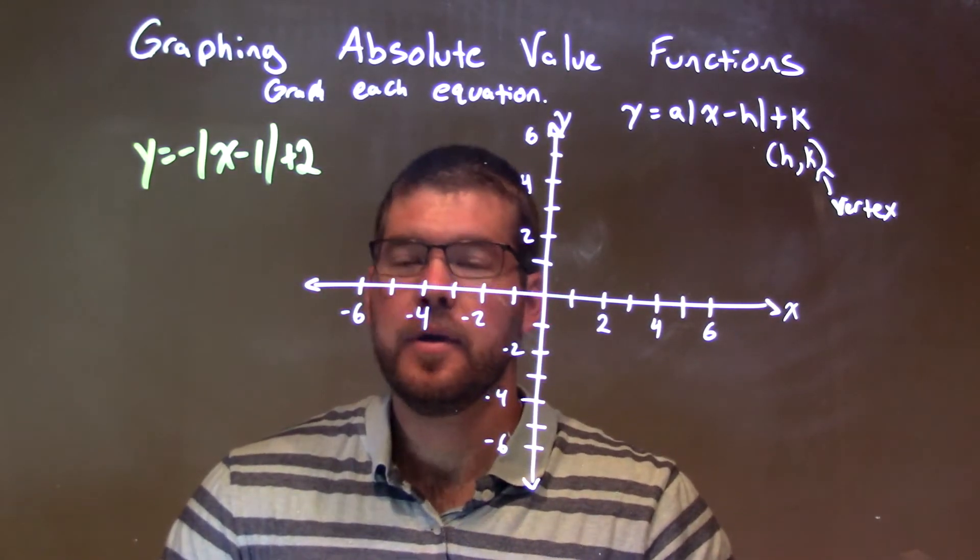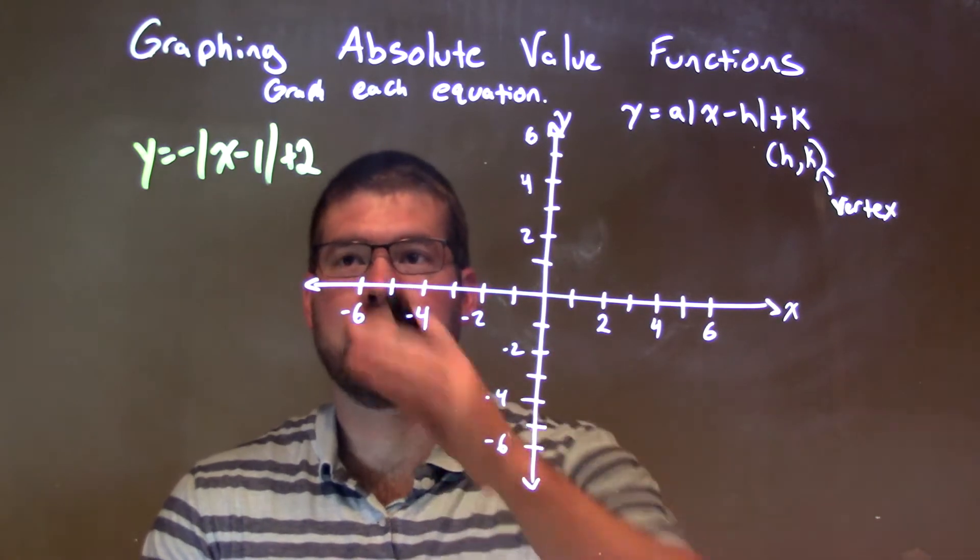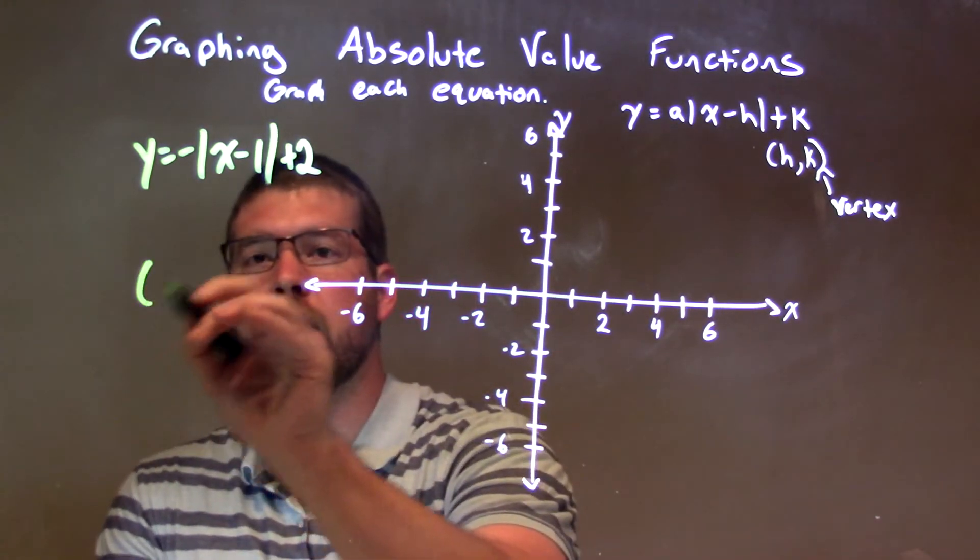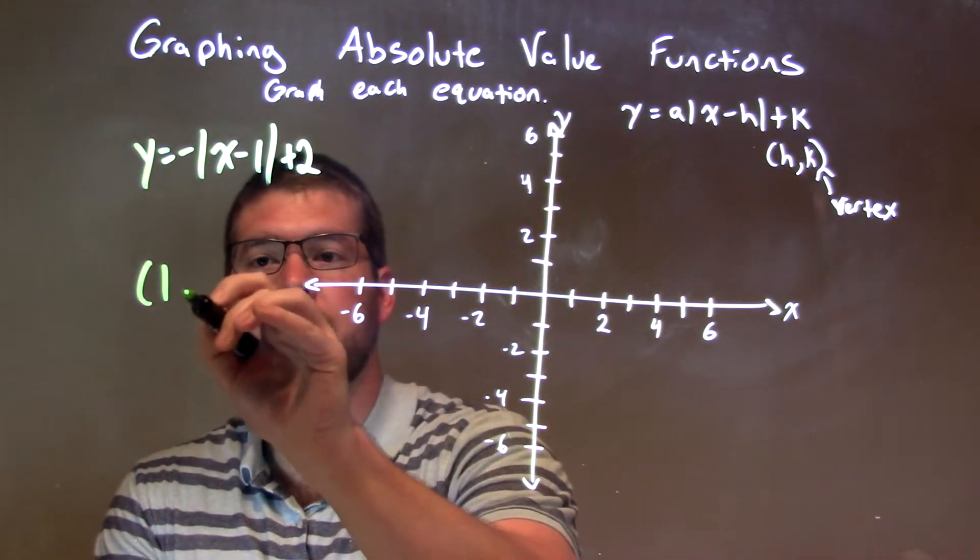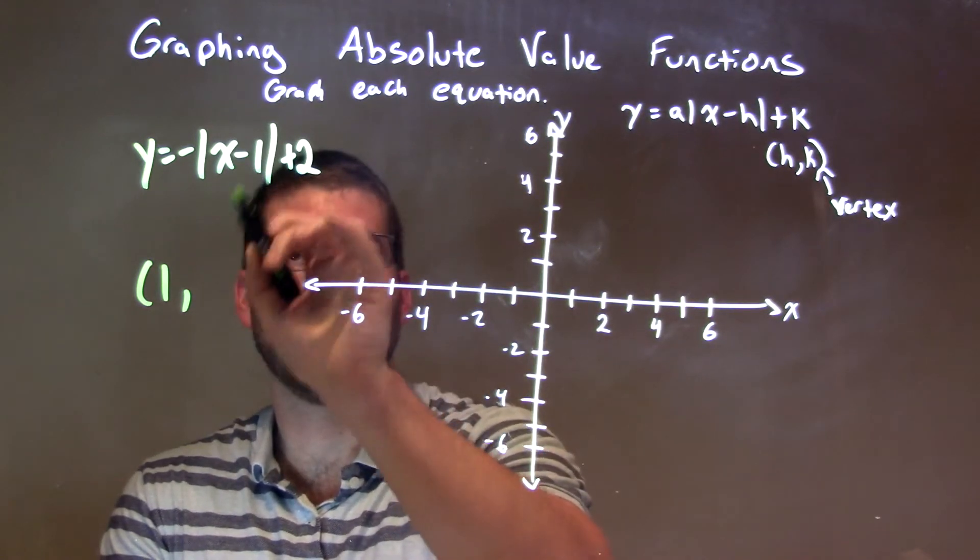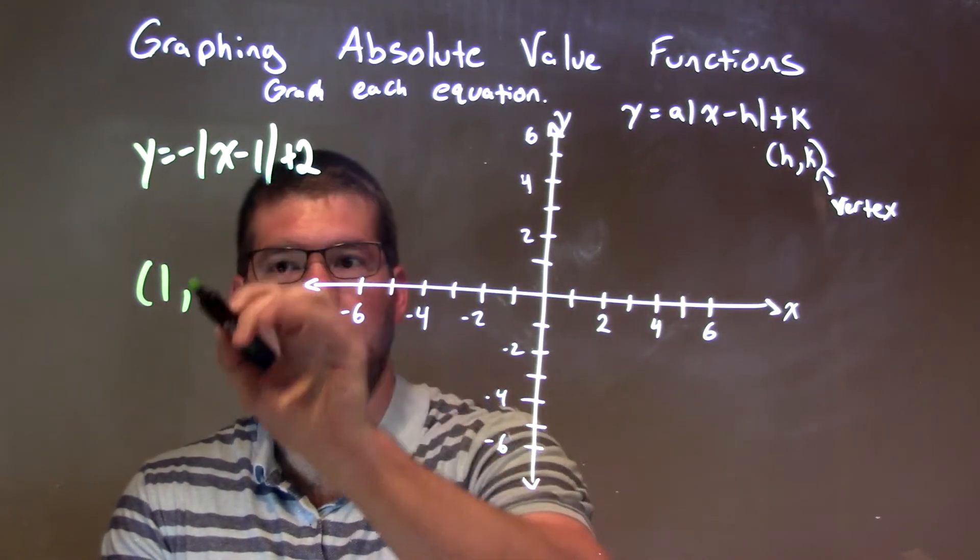First thing I want to do here is find the vertex. Now, luckily, it's pretty easy to find right here. Our vertex, our h value is a positive 1. It could be the minus between right there. So the h value is right there, that positive 1.